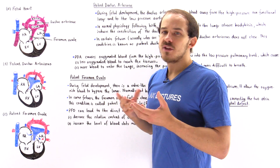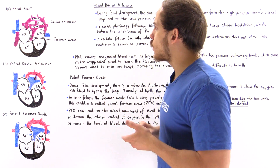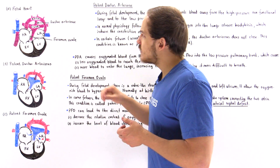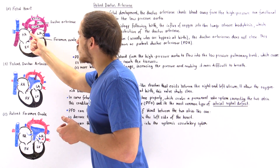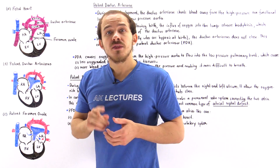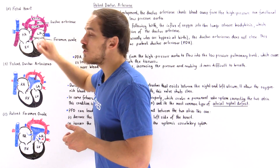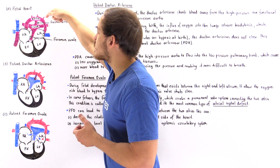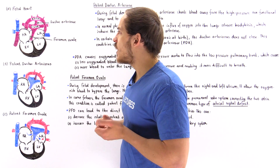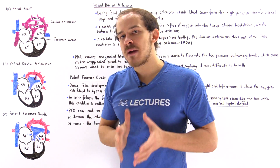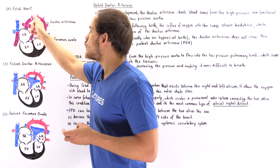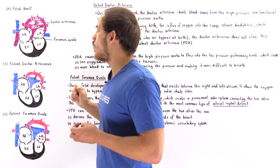The other type of duct is known as the ductus venosus, but we won't focus on it in this lecture. The ductus arteriosus connects the pulmonary trunk to the aorta. Inside the developing fetal heart, there is higher pressure inside the pulmonary trunk than inside the aorta, so most of the blood will once again bypass the lungs and be redirected directly into the systemic circulatory system via the aorta.